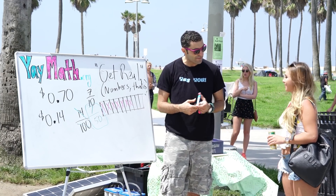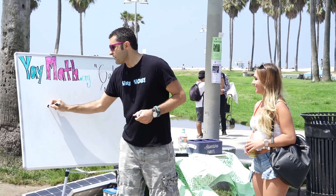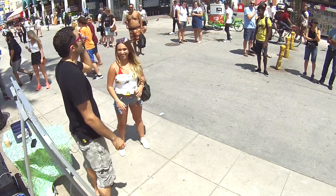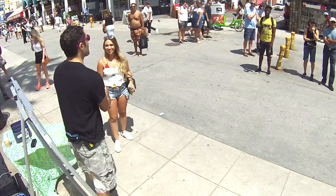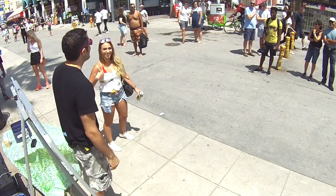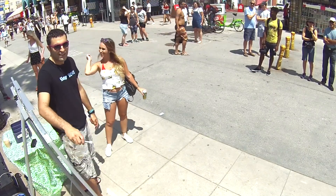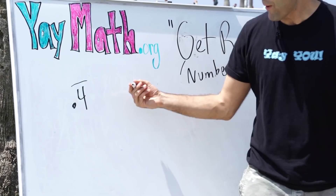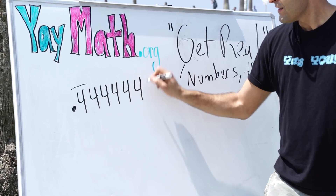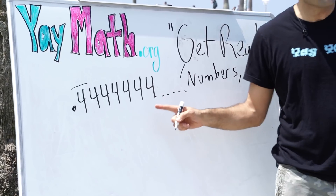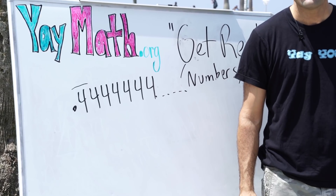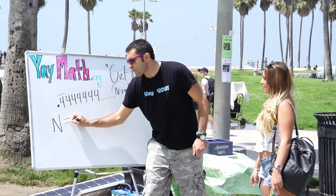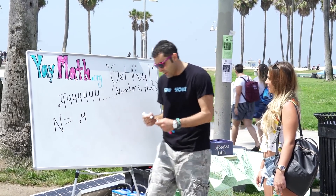Now for the tricky one: 0.4 repeating — 0.4444... going on forever. Nobody wants that! We want to turn this into a fraction. Let's call the repeating decimal n, so n = 0.444 repeating. I'm going to show a method — let me move things around and it'll pay off.